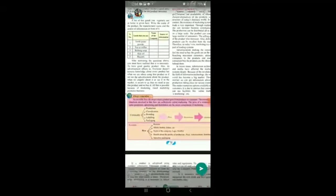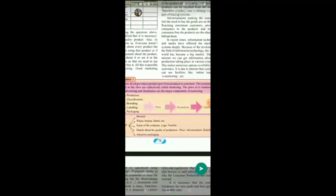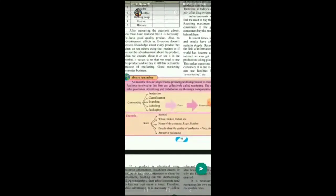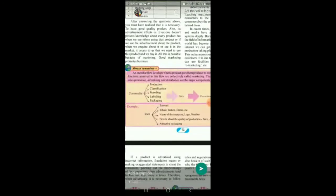The whole world is your market. Through the internet, we can get information about production taking place in various continents — we can come to know which product is being manufactured in which country. Any information, the internet is there to answer it. This makes numerous options available to customers. The customer can buy things from any country via the internet. It is due to the internet that customers can use facilities like online trading, e-marketing, etc.